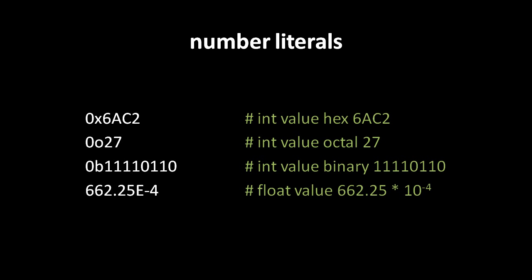Python also has syntax for expressing int values in hex, octal, and binary, written by prefacing the number with 0 followed by 'x' for hex, 'o' for octal, or 'b' for binary — these letters can be uppercase or lowercase, though lowercase is generally more readable. For float values in scientific notation, write the mantissa followed by 'e' and then the exponent.